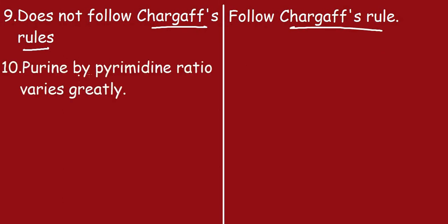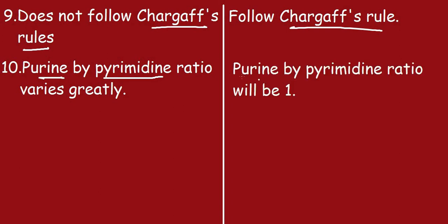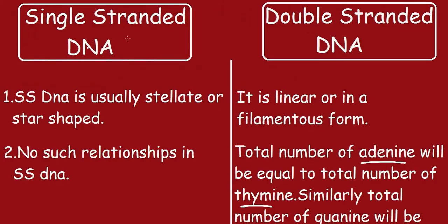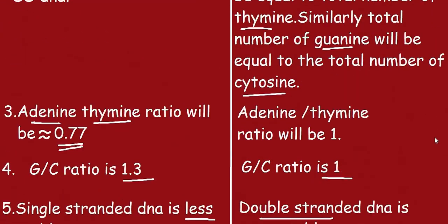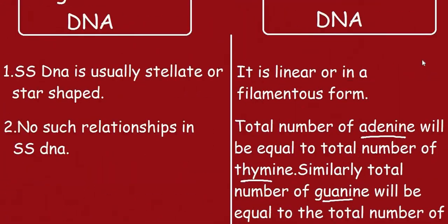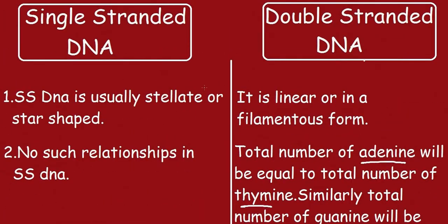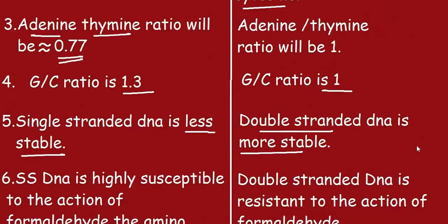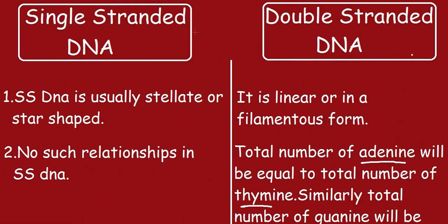The tenth and final point: for single-stranded DNA, the purine-to-pyrimidine ratio varies greatly. For double-stranded DNA, the purine-to-pyrimidine ratio is 1. These were the differences between single-stranded DNA and double-stranded DNA. Now a diagram will be shown to give clarity regarding these structures.